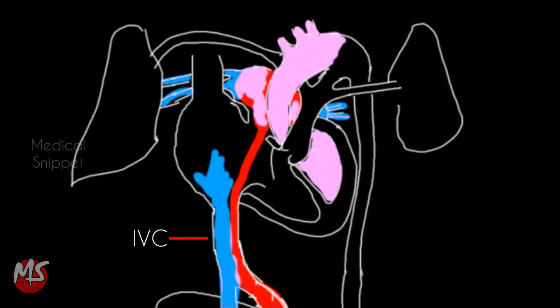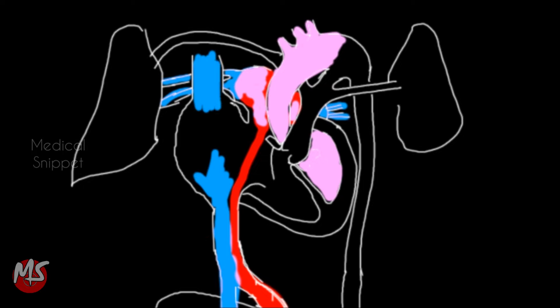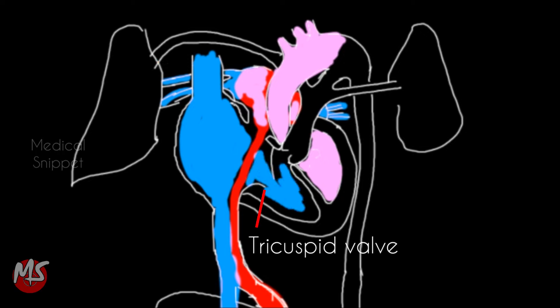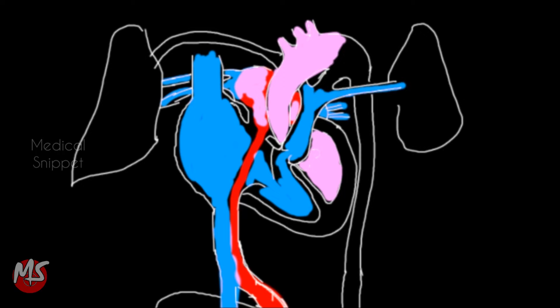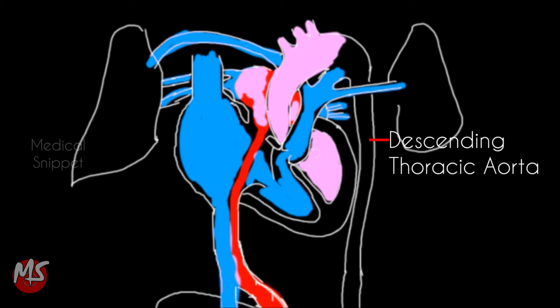The highly deoxygenated blood from the lower limbs and abdominal viscera reaches the IVC and is preferentially directed across the tricuspid valve into the right ventricle. The deoxygenated blood from the SVC is also preferentially directed across the tricuspid valve into the right ventricle. It is then pumped into the pulmonary artery. As the pulmonary vascular resistance is very high in the fetus, most of the right ventricular output is directed into the descending thoracic aorta via the ductus arteriosus.